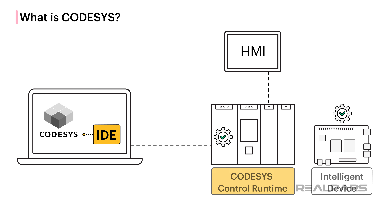Finally, since so many individuals and companies are using Codesys, a lot of feedback is given to 3S, which allows them to rapidly introduce and test new features, and discover and fix bugs in the software. This is one of the reasons why the Codesys Development System is so advanced, with innovative features like object-oriented industrial programming included.